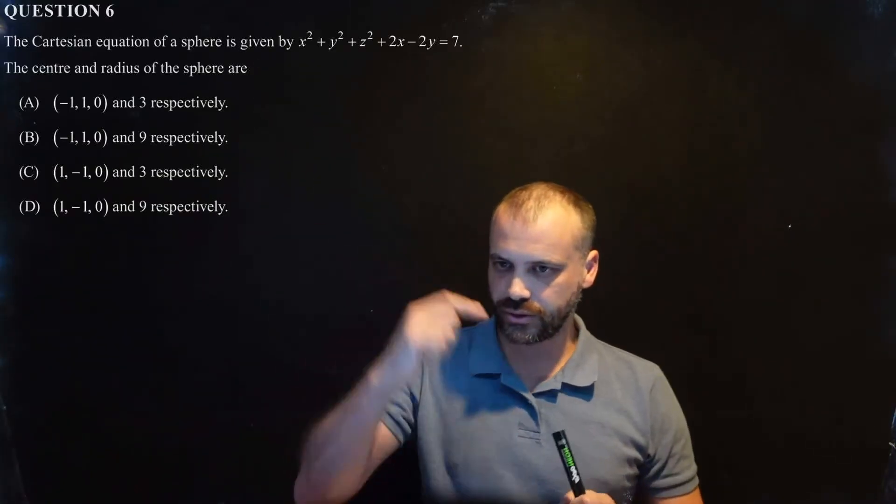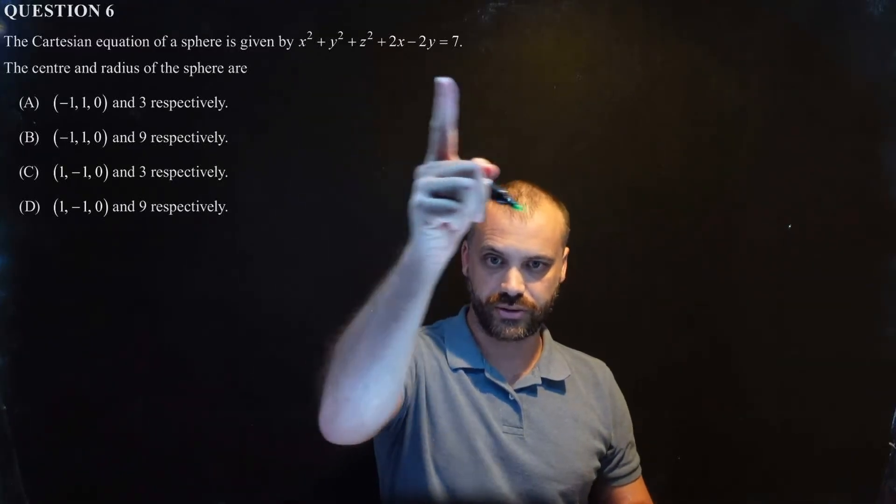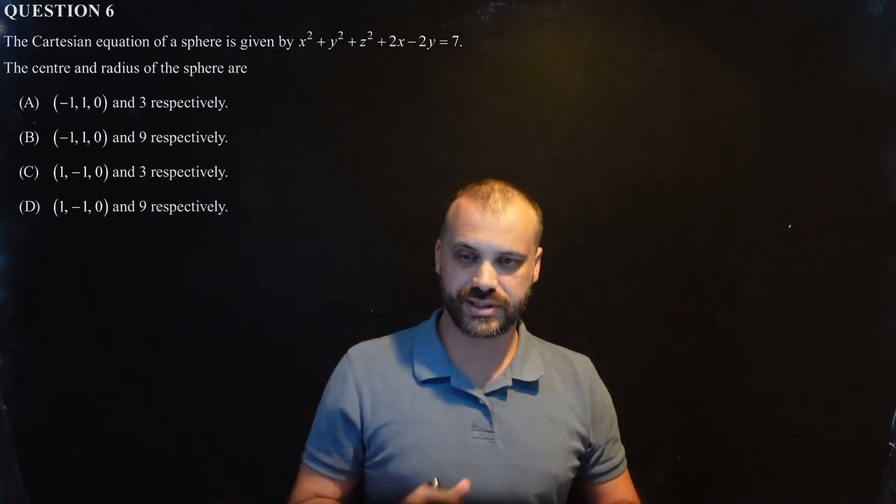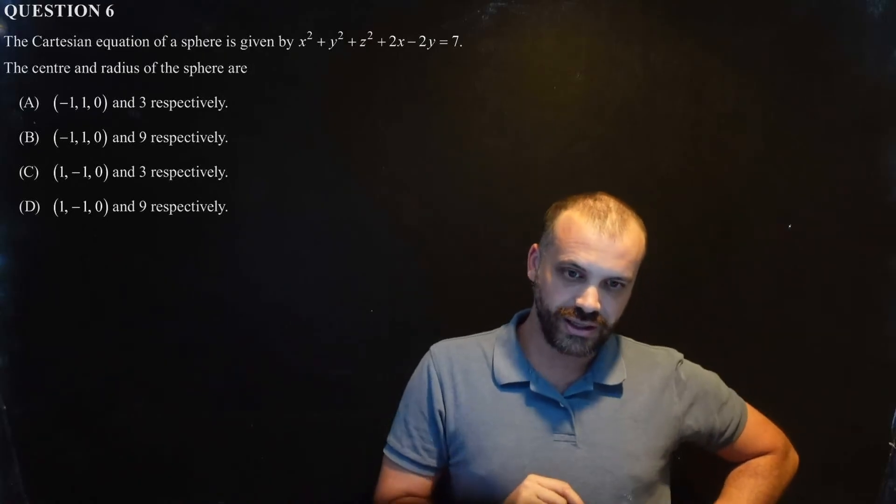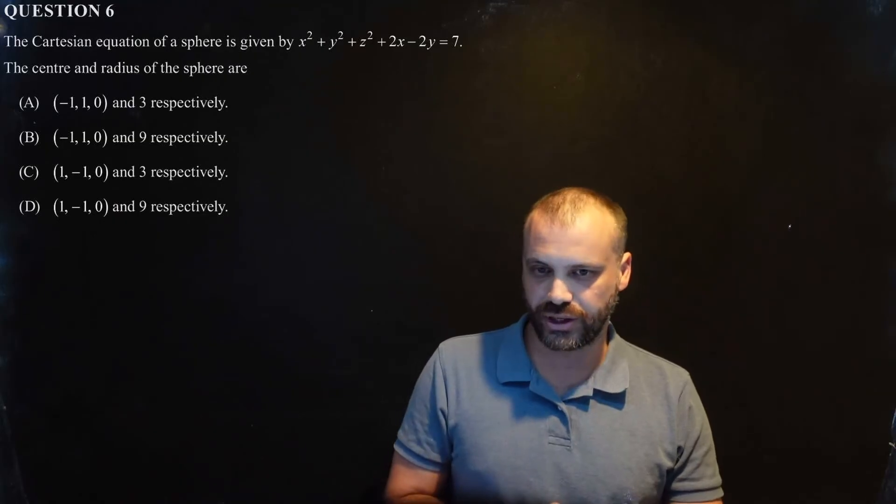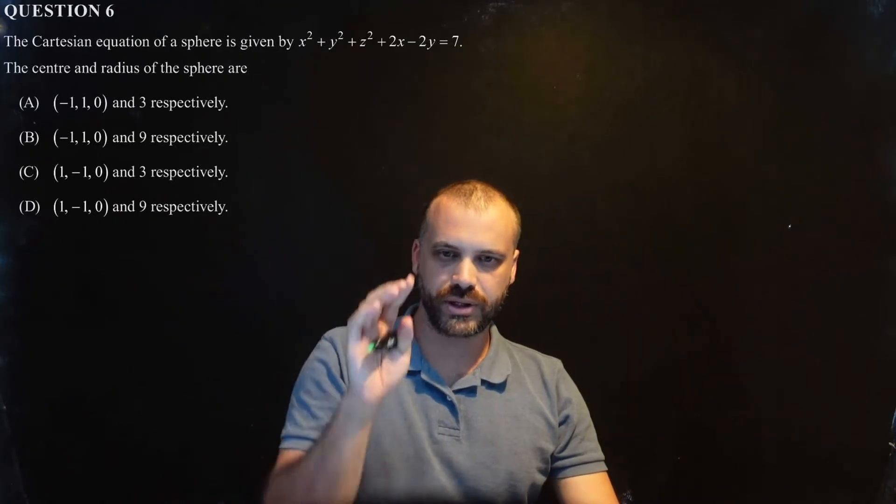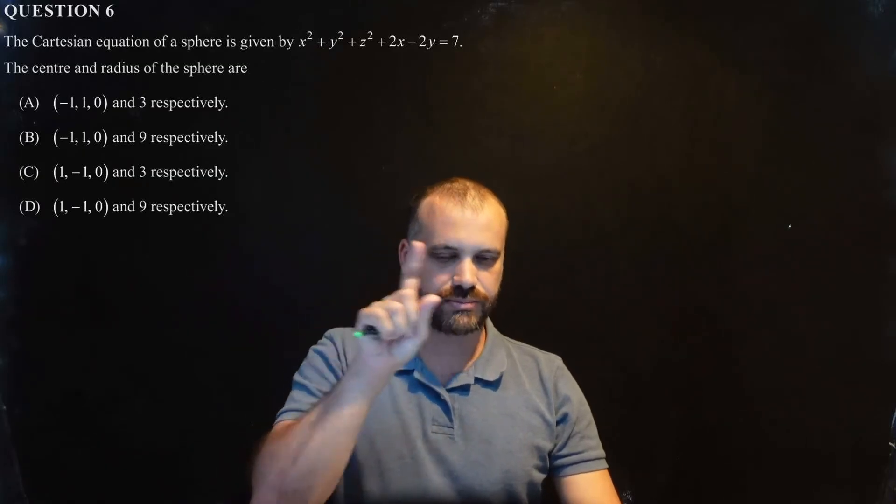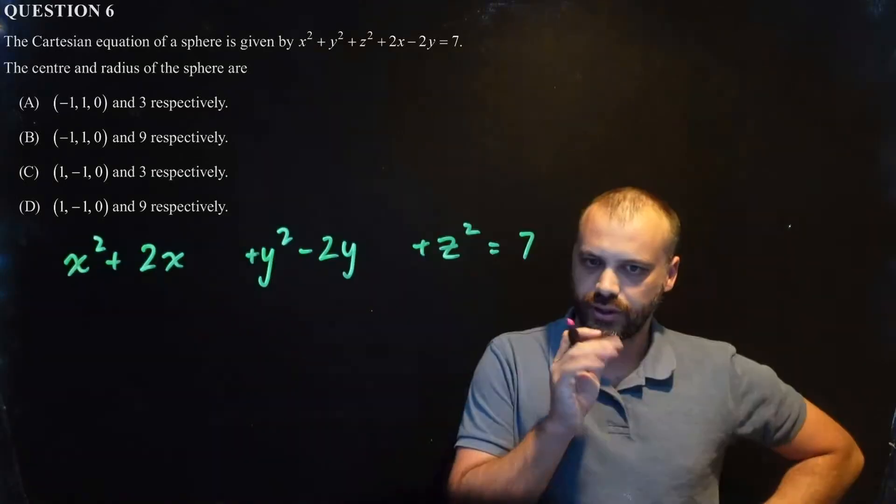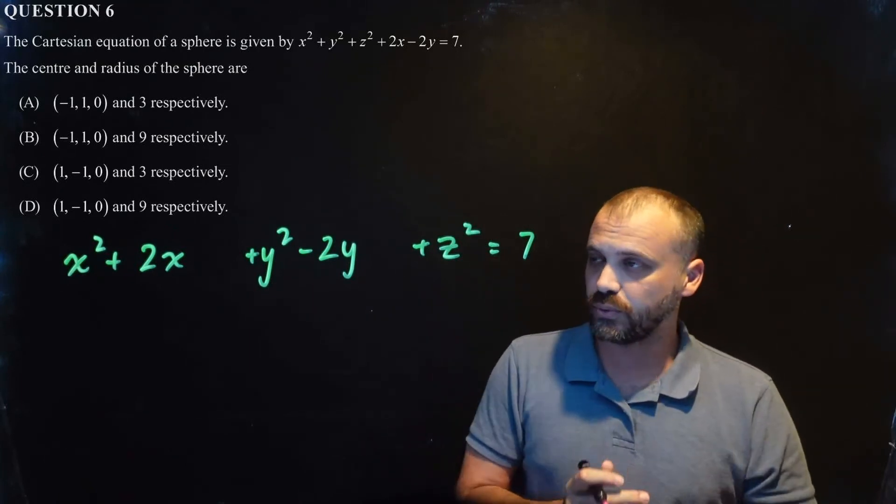Alright, here we have another question. The Cartesian equation of a sphere is given by this nonsense here. What is the centre and radius of the sphere? Now, if you don't like completing the square, you are very much not going to like this question. So, the first thing I'm going to do is rewrite this one, but I'm going to make sure that I'm grouping my x's, my y's, and my z's together. Okay, and you can see that I've drawn it out, and I've sort of spaced it out very strategically.